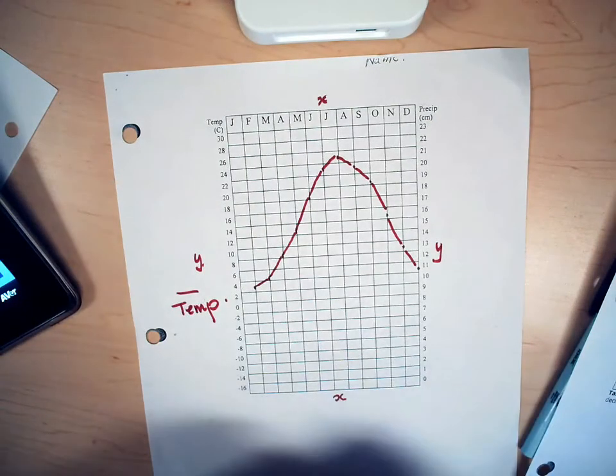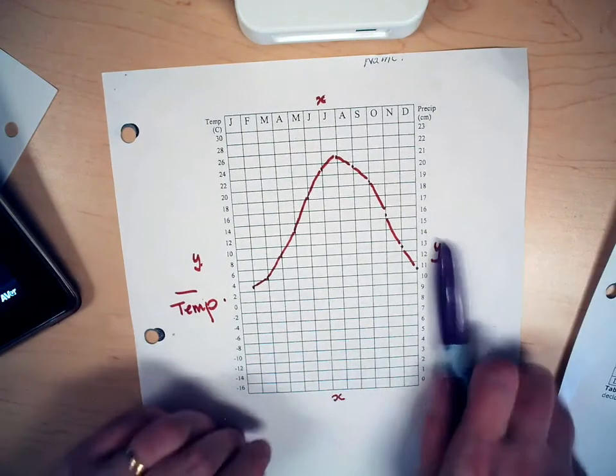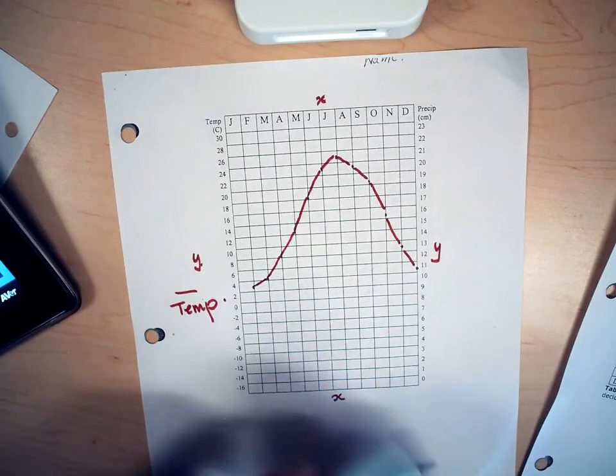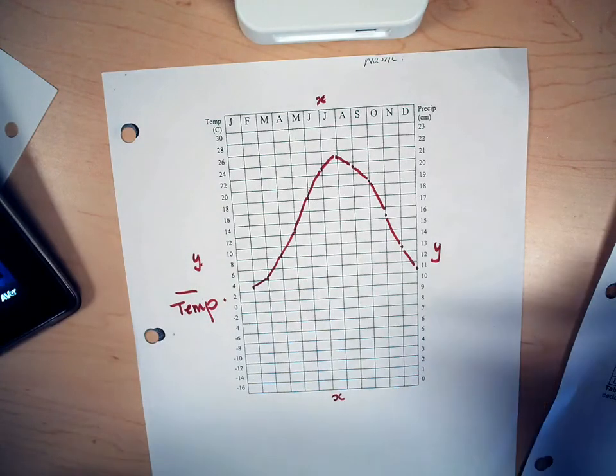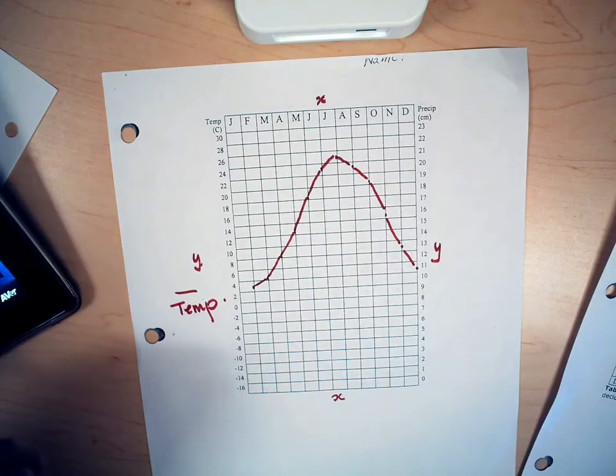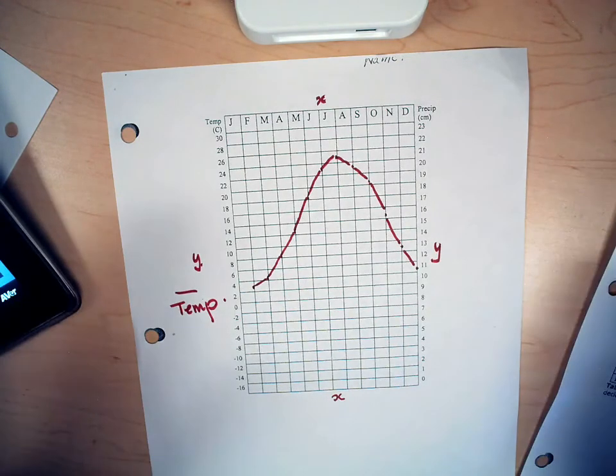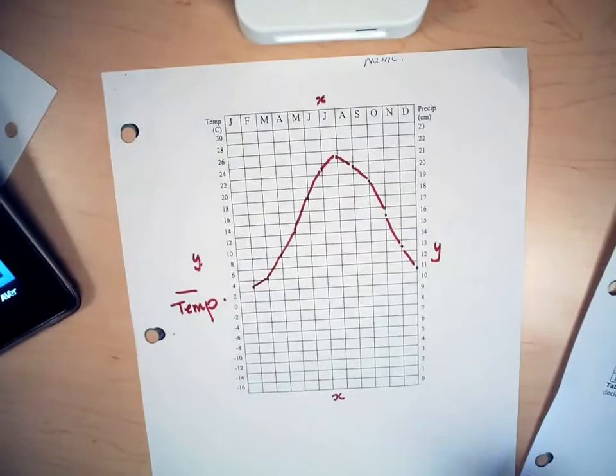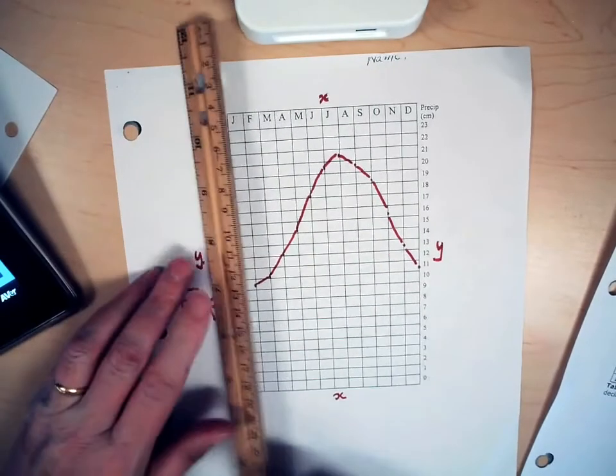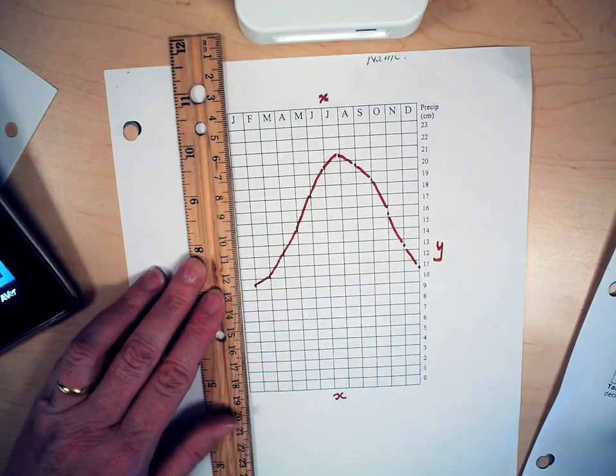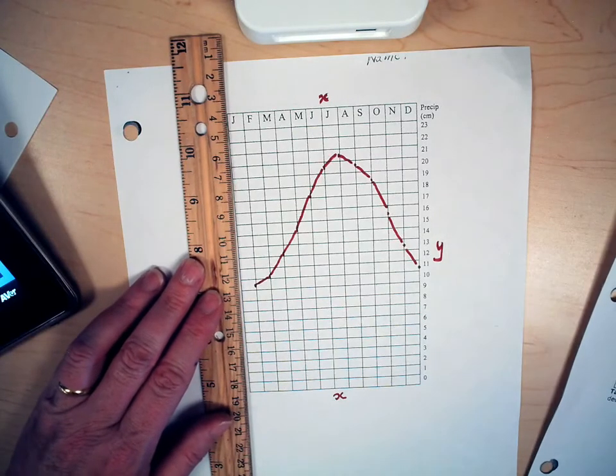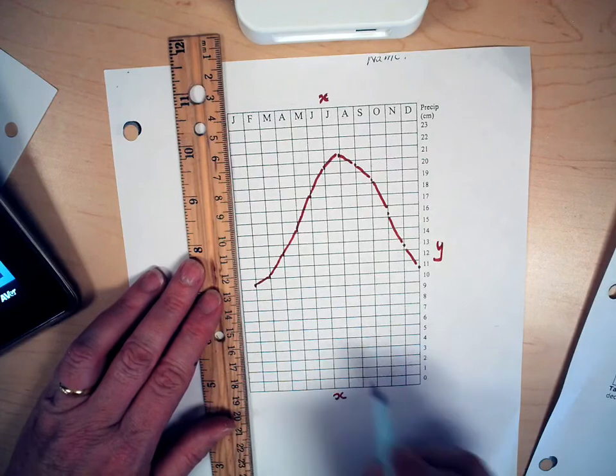Now let's plot the precipitation and in this case we're going to use a bar graph. January. Now I think what makes it easier so you don't get confused is to cover up this side. And now we're going to use this axis. That way you won't get confused. January precipitation is 8.5.